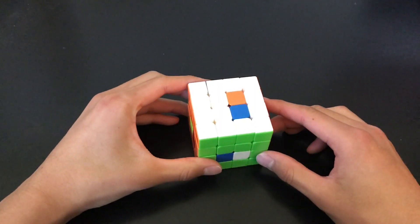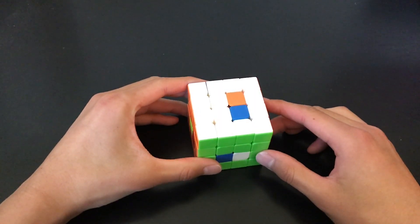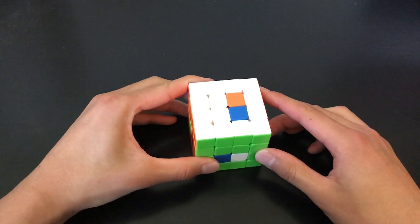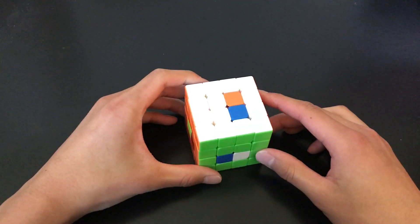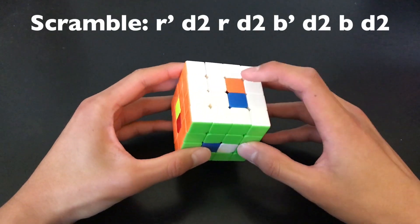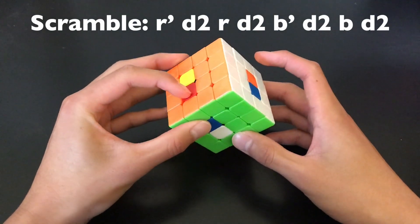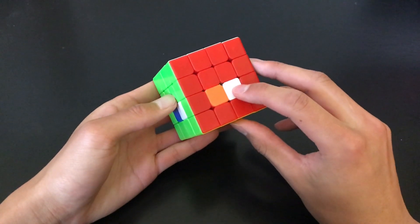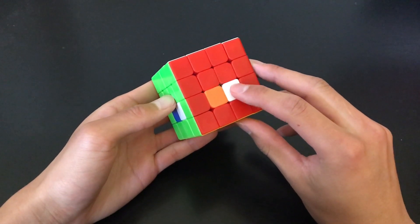You might be wondering, how do I know if shooting to this sticker is going to lead to a cycle break? Well, you don't. But you can minimize your chance of getting a cycle break by avoiding white centers. For example, in this scramble, the first target will be here and then here, like normal. However, on the red face, the next target is a white center.